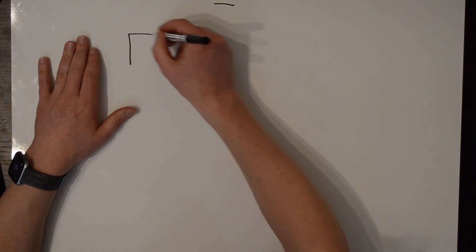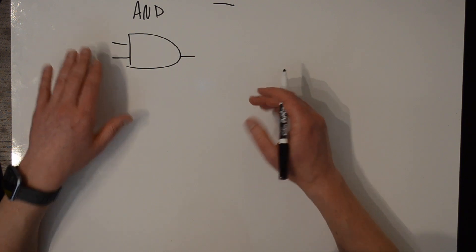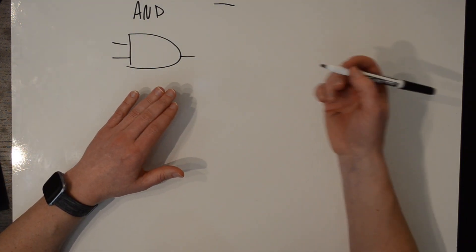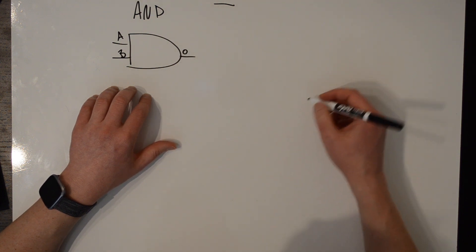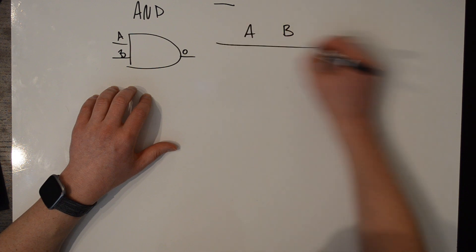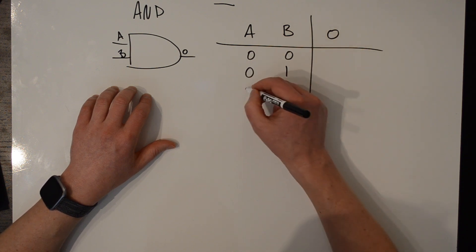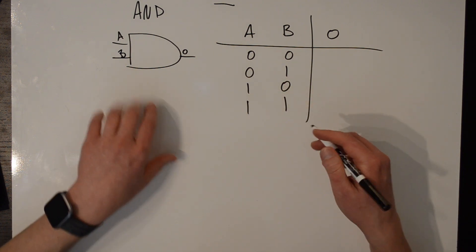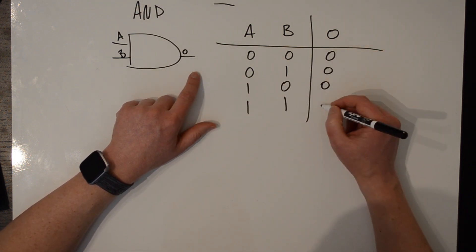Now all we need is a machine that can do that work for us. The machines that run binary math are made out of what are called logic gates. A logic gate is drawn kind of like this. This is an AND gate. It has two inputs and one output, and the operation of these gates is often represented in what's called a truth table. So you take each of the inputs — we'll call them A and B — and call the output O. The possible inputs are 0-0, 0-1, 1-0, 1-1. An AND gate's output is 1 if both inputs are 1. So the outputs are 0, 0, 0, 1.